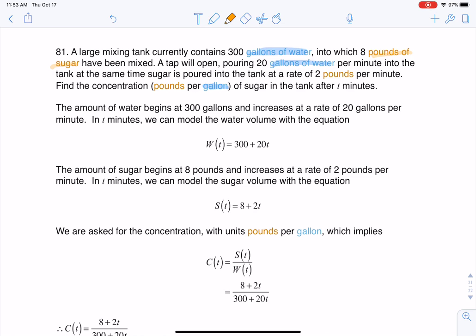I want you to imagine you have a big tank of water and you're pouring sugar into there. A tap will open pouring 20 gallons of water per minute into the tank. At the same time the sugar is poured into the tank at the rate of 2 pounds per minute. So again we have this big tank of water. We're going to pour some sugar in it and also pour some more water in it.